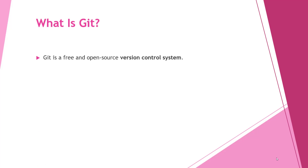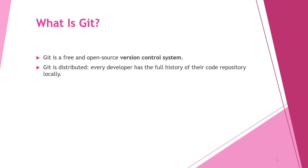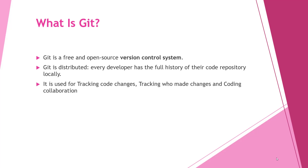What is Git? Git is a free, open source version control system. It is distributed — every developer has the full history of their code repository locally. It is used for tracking code changes, like when you change something you can see when that change was submitted to a branch, and also who made those changes — it enables coding collaboration.